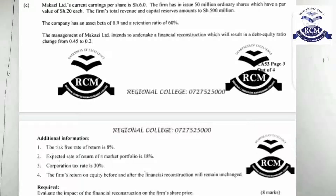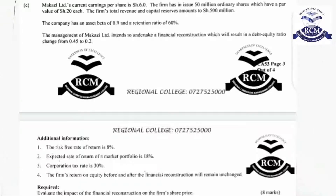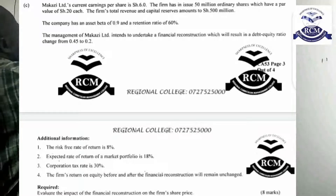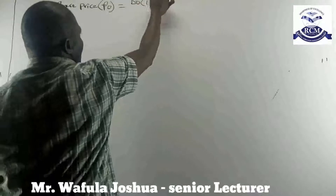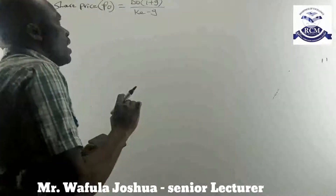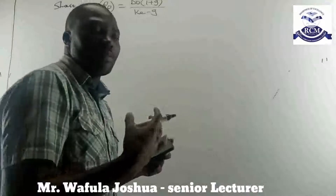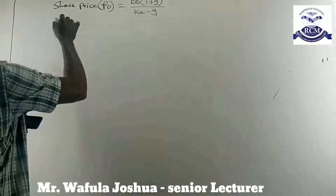RF is 8%, the expected return of the market portfolio is 18%, and the tax rate is 30%. The firm's return on equity before and after financial reconstruction will remain unchanged. We need to evaluate the impact of the financial reconstruction on the firm's share price. The share price PO equals D0 times (1 plus G) over (KE minus G). We need to compare the share price before reconstruction with the share price after reconstruction.